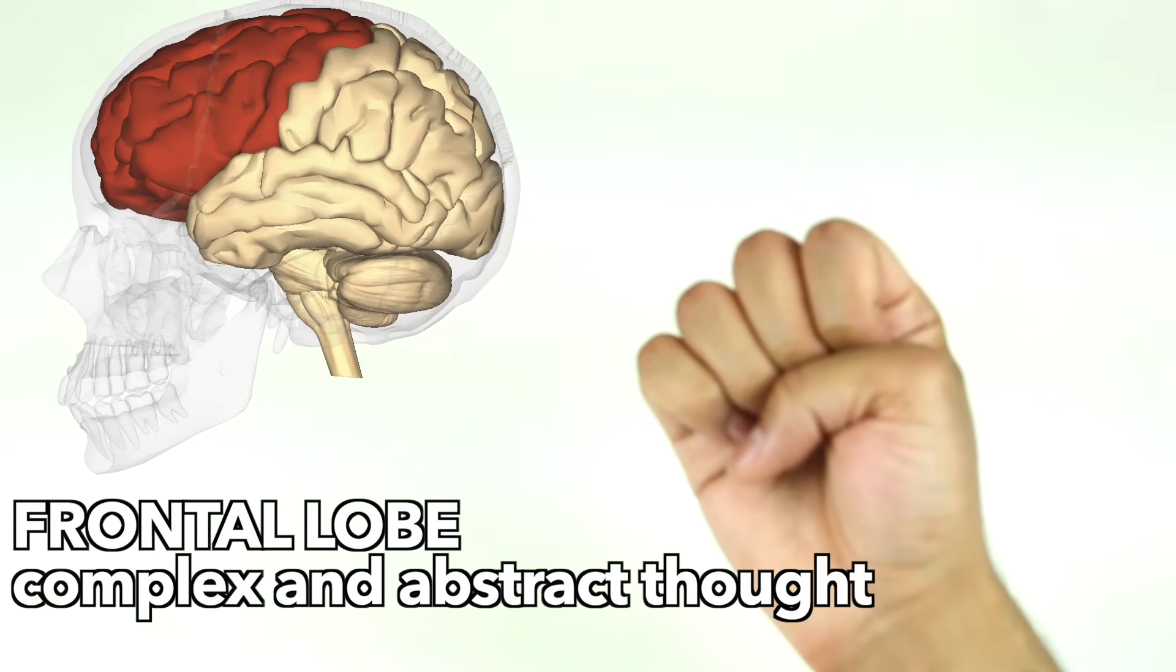The frontal lobe helps you to make plans, imagine possible futures, and helps you to control your emotions. It doesn't finish developing until your mid-twenties, which is why a lot of kids and teenagers can sometimes do impulsive things.